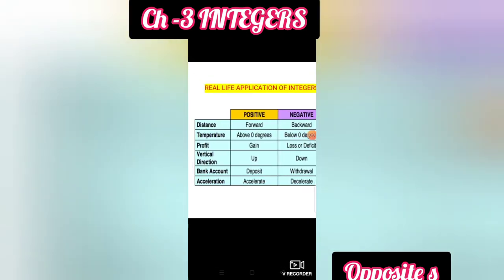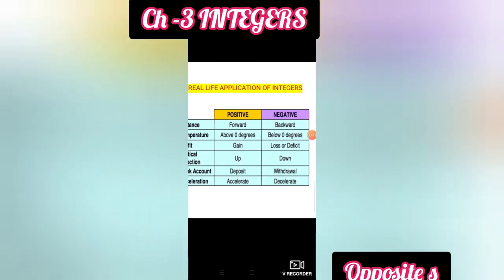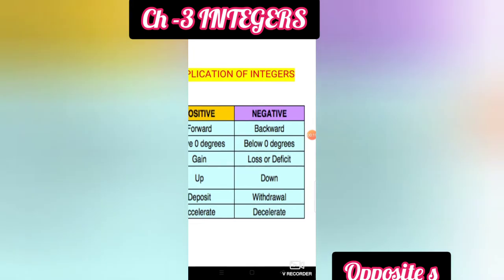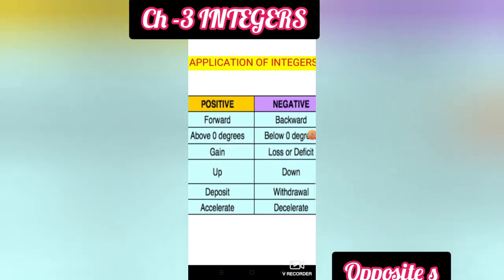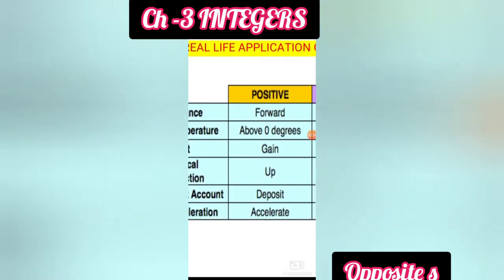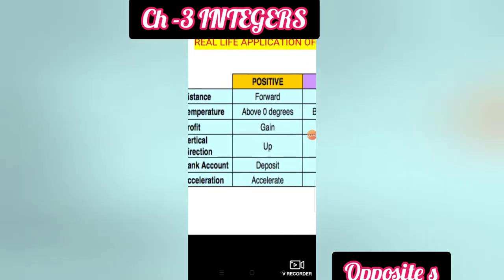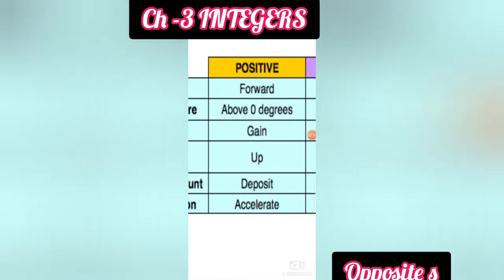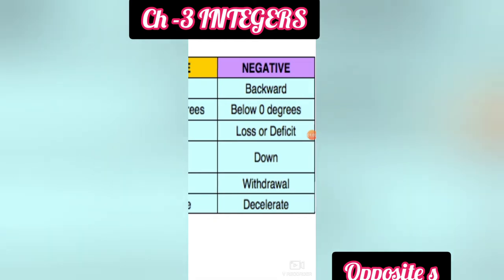Real-life applications of integers: for distance, forward is positive and backward is negative. For temperature, above 0 degrees is positive and below 0 degrees is negative. For profit, gain is positive and loss is negative. For vertical direction, upward is positive and downward is negative. In bank accounts, depositing money is positive and withdrawing money is negative. In acceleration, accelerating is positive and decelerating is negative.